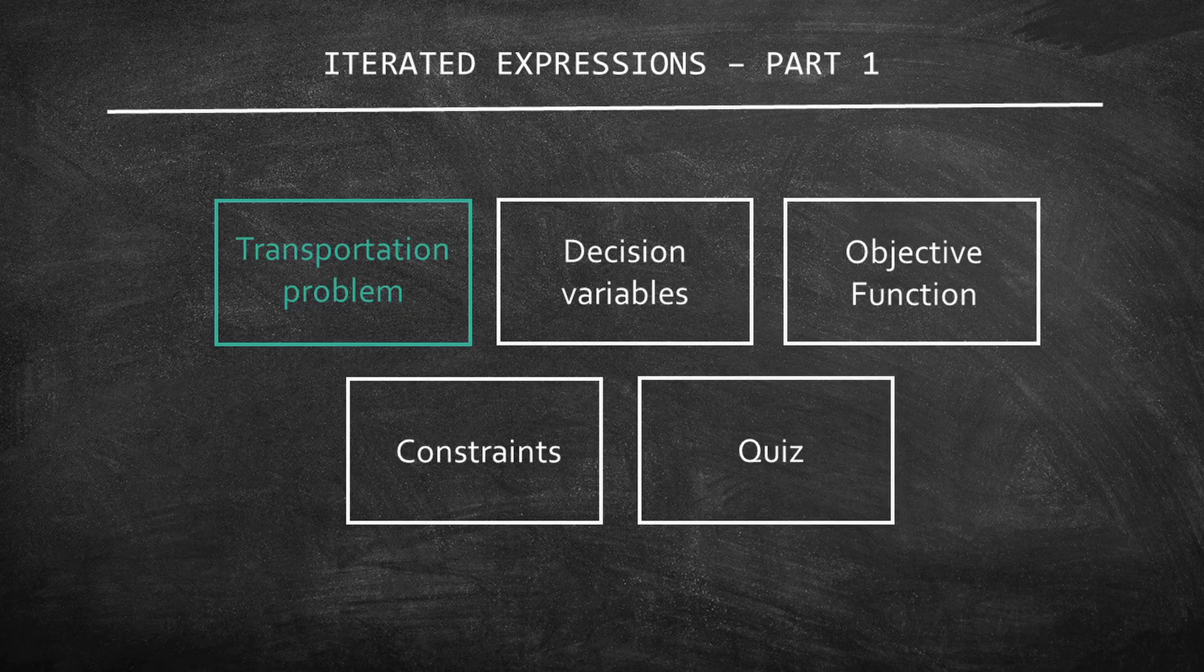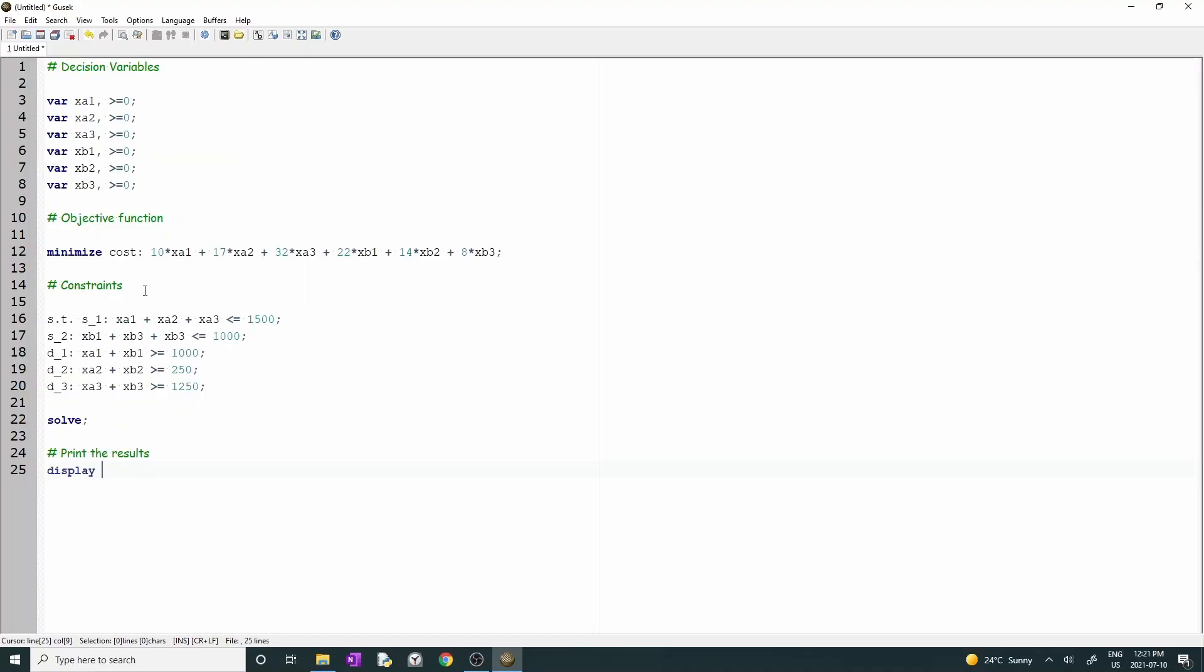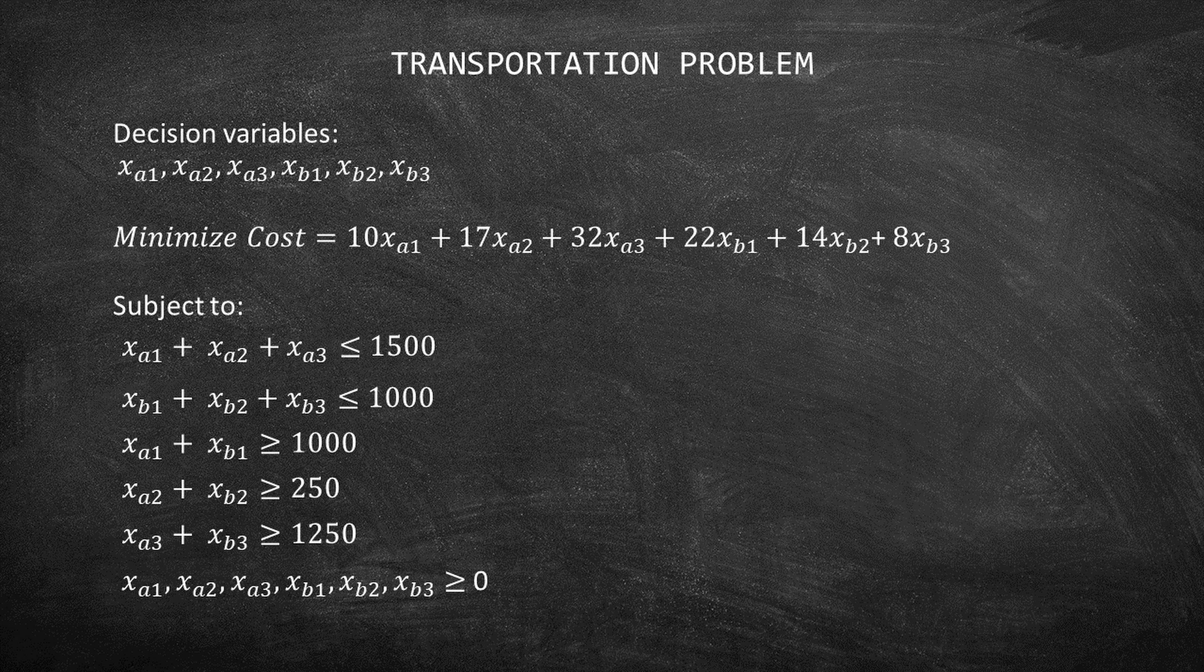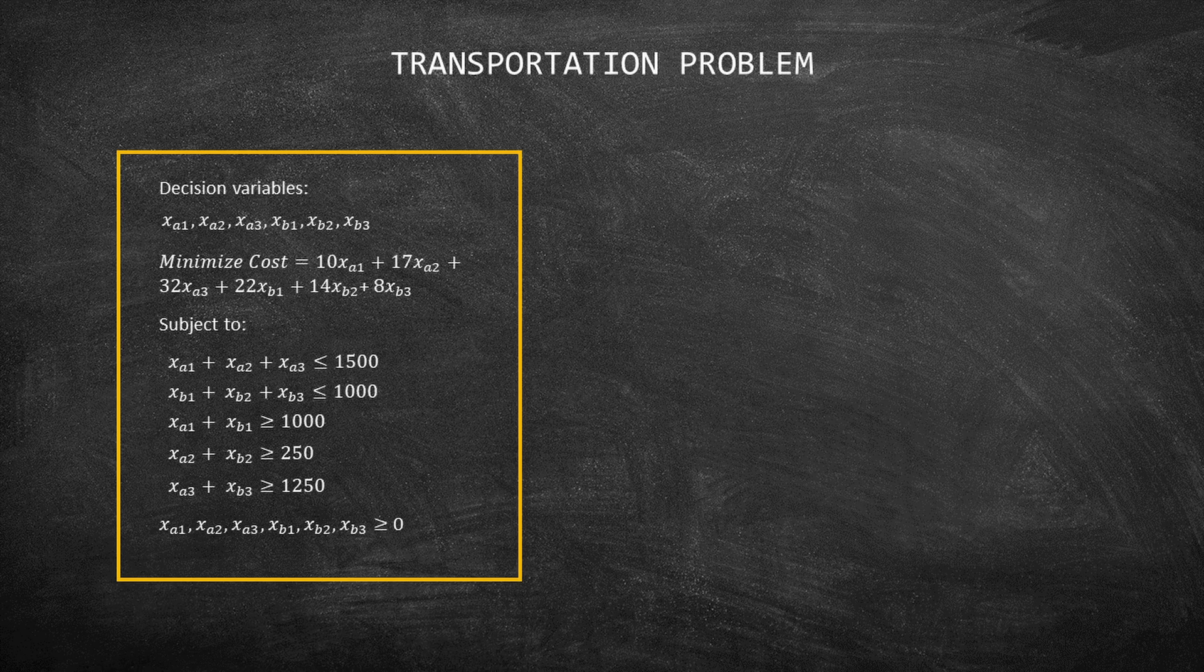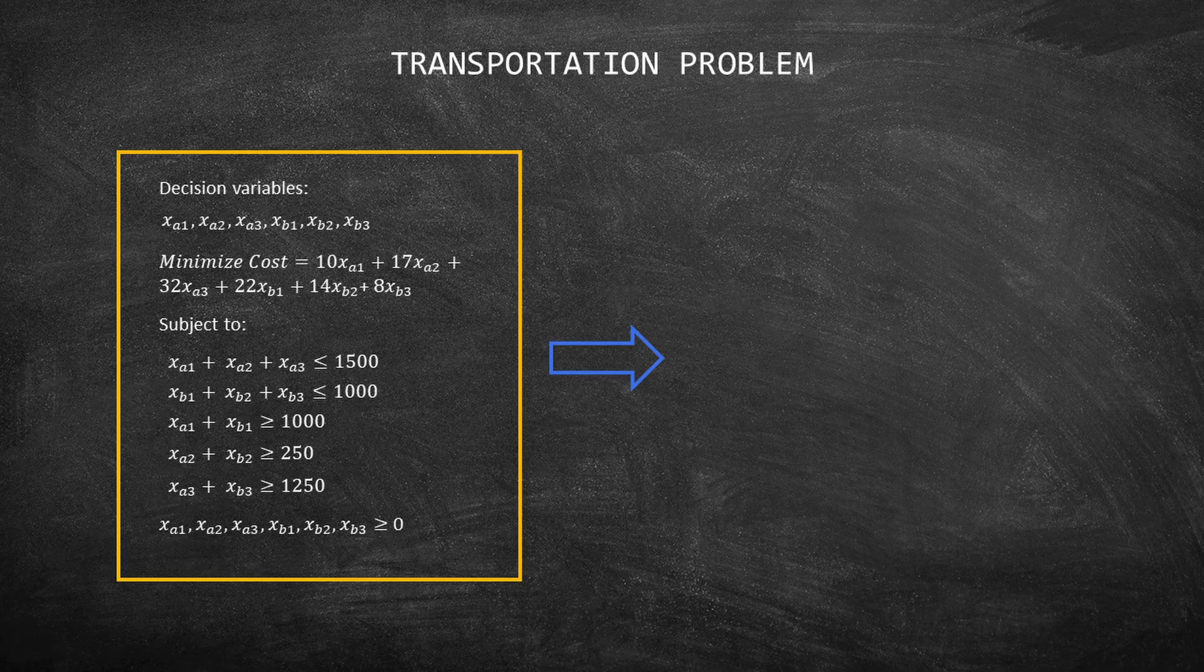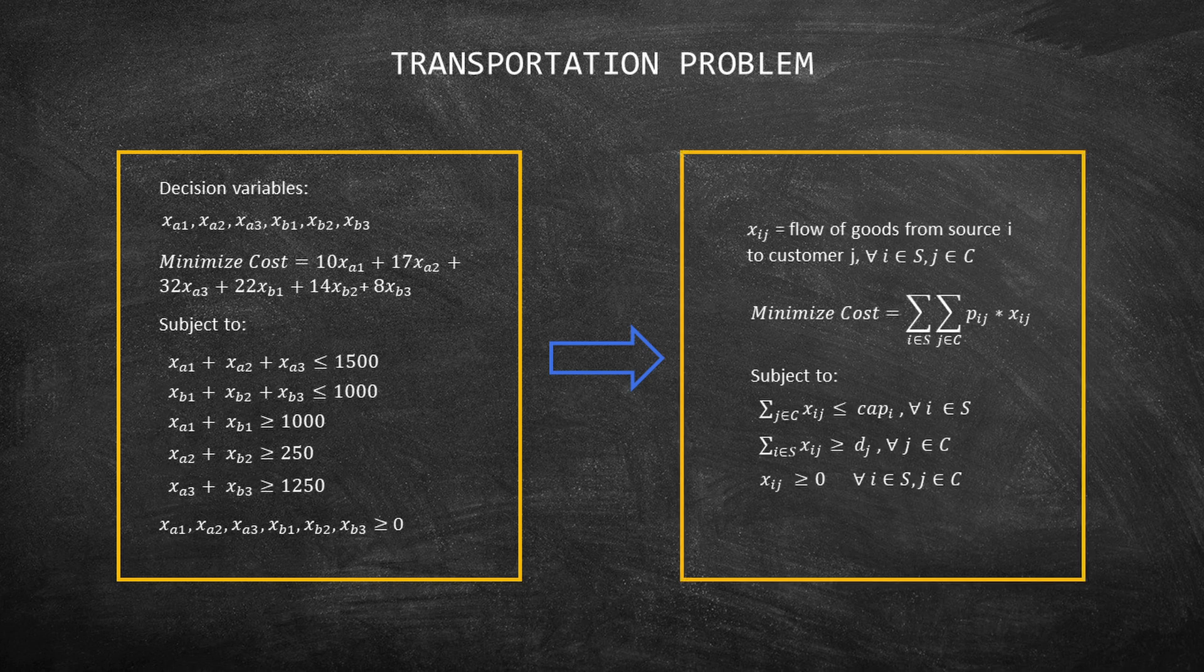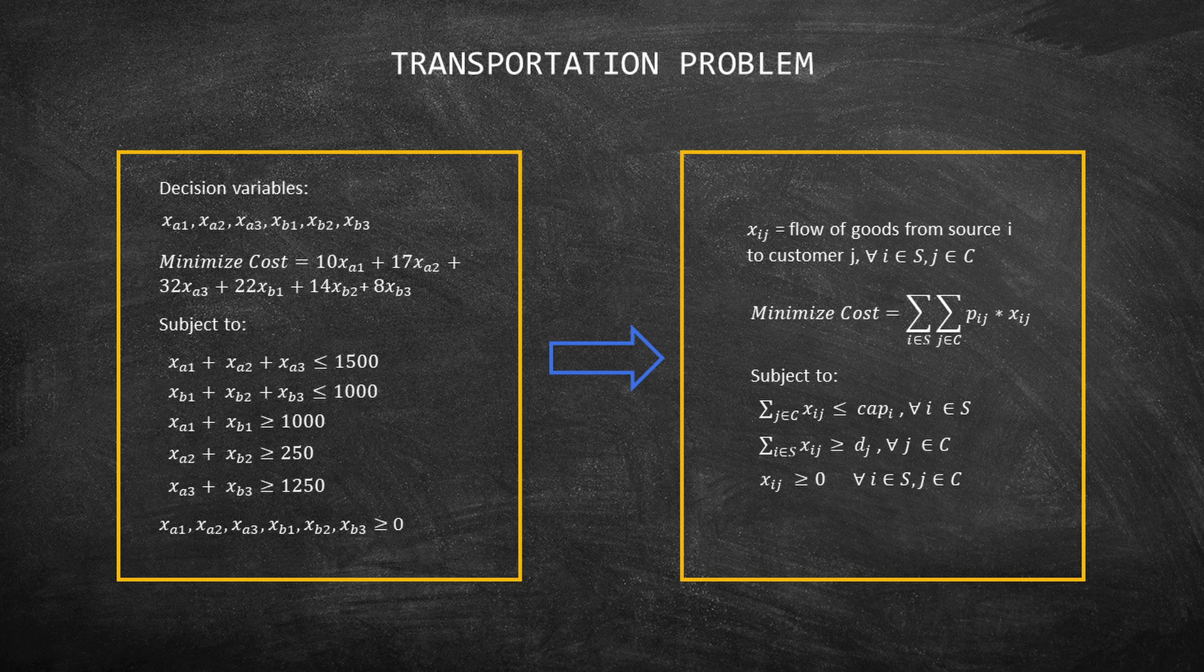Remember that in the previous video we hard-coded a problem on Gusek? The model you are seeing is the one that we used before. It is going to be our example in this video as well. I will leave the link of how to hard-code a model on Gusek in the description below. As I mentioned, our goal is to rewrite this model in a compact form. Before we jump to the formulation, I will describe the problem.